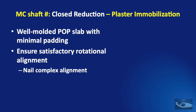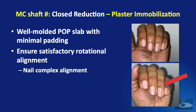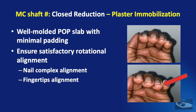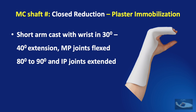We need to ensure that there is satisfactory rotational alignment by looking at the nail complex alignment. As seen in the example, there is a rotation deformity of the nail complex, and the tips of the fingers can also be examined for alignment to rule out any rotation of the metacarpal following reduction. This immobilization consists of a short arm cast with the wrist in 30 to 40 degrees of extension, metacarpophalangeal joints flexed to 80 to 90 degrees, and interphalangeal joints kept extended. This is sometimes known as a clam digger splint.